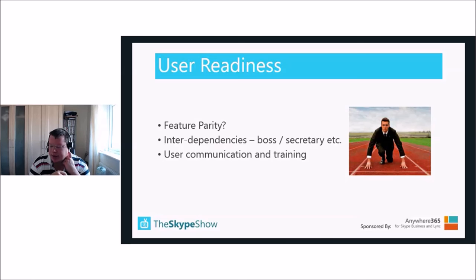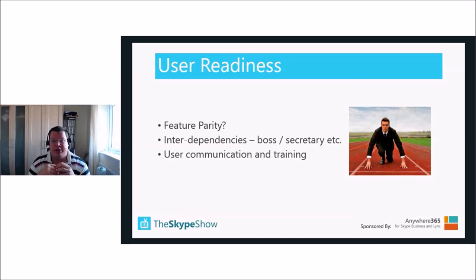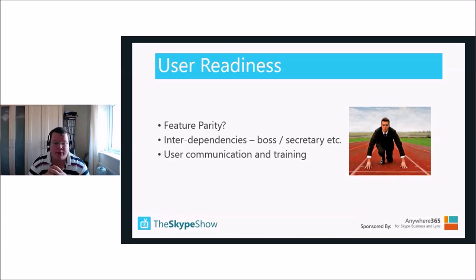For interdependencies — boss-secretary scenarios, hunt group membership — we need to establish whether a user is a delegate or delegator and collect all dependent users and functions into a data set. We can then say we're moving this one user but they have 14 delegates or 10 people in their agent group that need to be incorporated in the same move in order to maintain functionality when we migrate across.